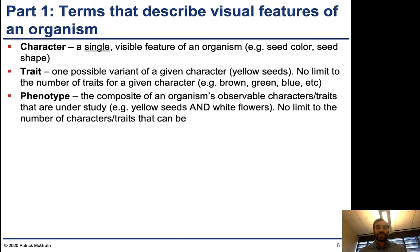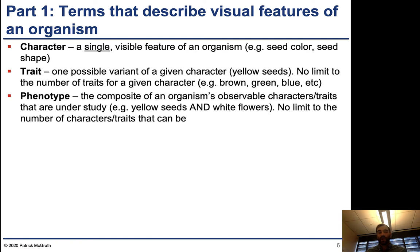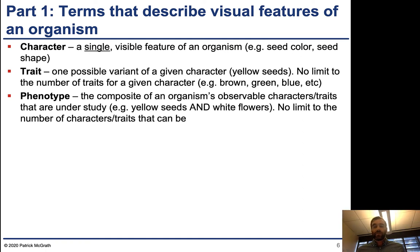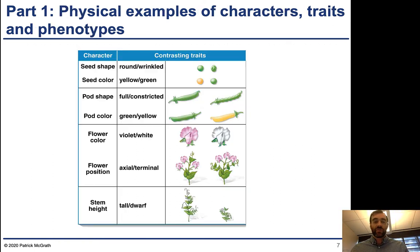The phenotype is the composite of an organism's observable characters and traits under study. The phenotype is not limited to a single character — we could be looking at multiple things at the same time. Yellow seeds and white flowers would be an example of a phenotype, so when we talk about the phenotype, we're talking about how it looks in total.